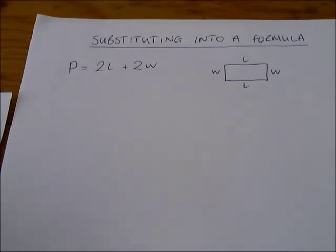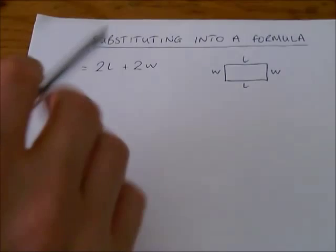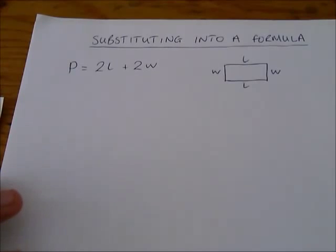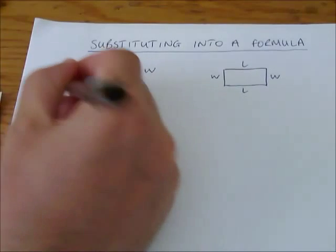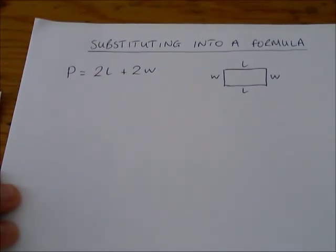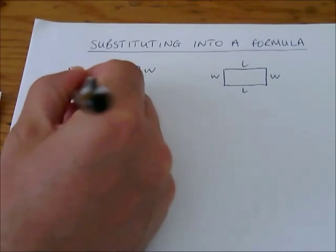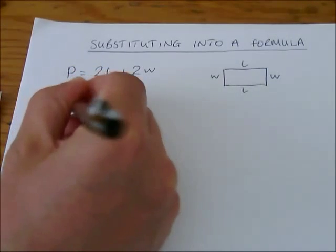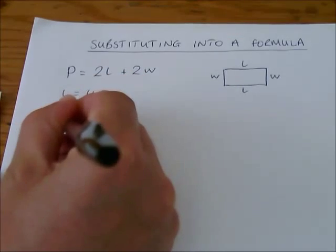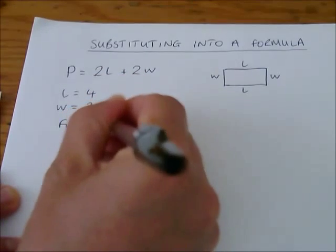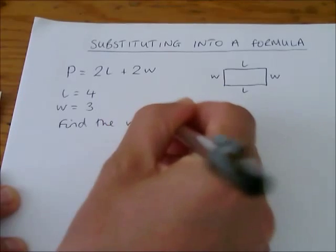All that's important is that you're given a formula. And what the question would normally say is, we'll give you a formula like this, and if you're asked to substitute into a formula, you'll be asked to put some numbers in the place of the letters. So let's look at this as a typical question. Let's say that they tell you that L equals 4 and W equals 3, and they ask you to find the value of P.